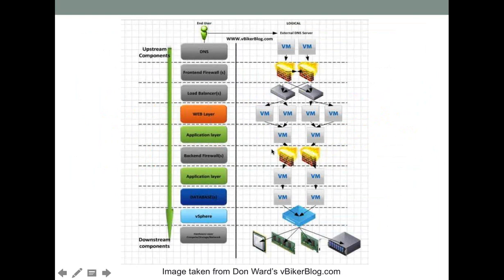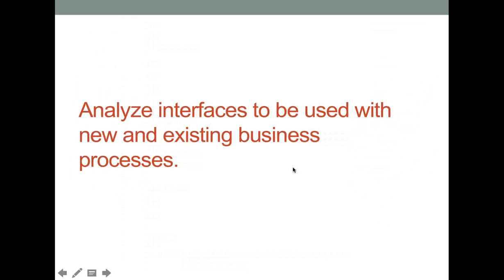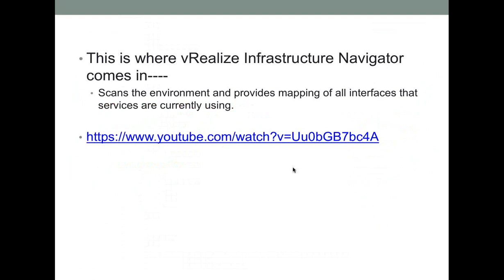Analyzing interfaces to be used with new and existing business processes really comes back to vRealize Infrastructure Navigator. It scans your infrastructure — it takes a while — and then provides a mapping of all the interfaces your services are currently using, giving you a nice visual. You can borrow that visual and create your own diagrams. There's also a demo on YouTube that VMware has online showing vRealize Infrastructure Navigator and how it provides this mapping.